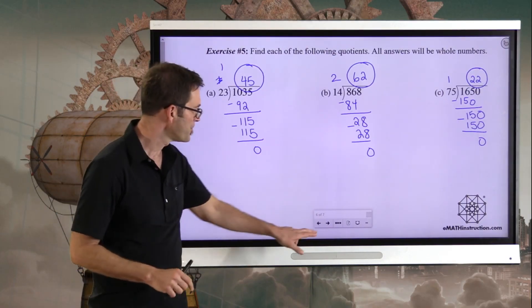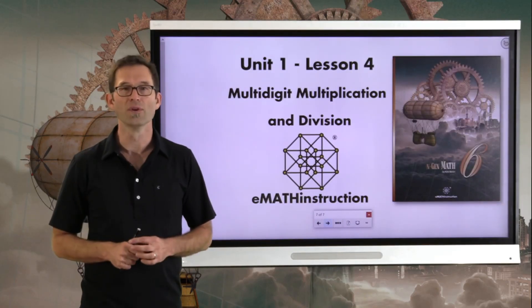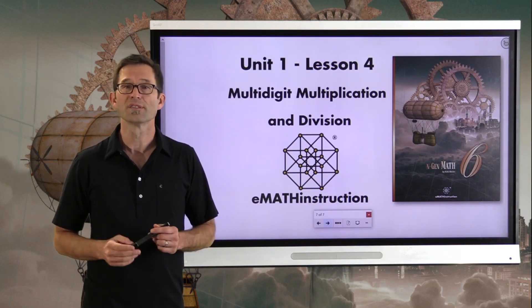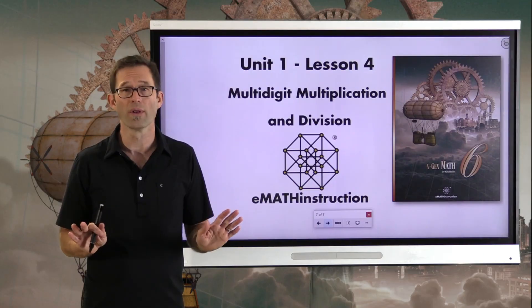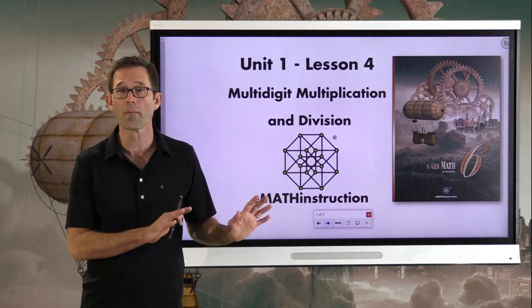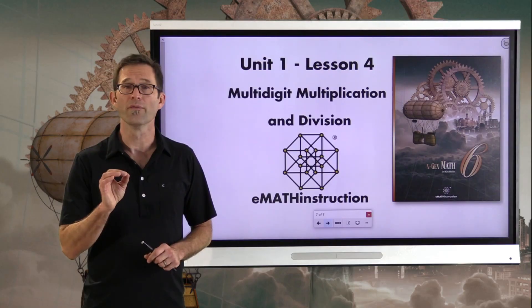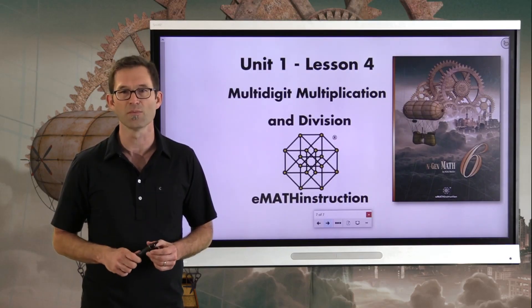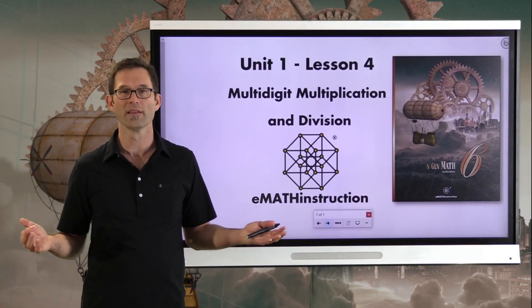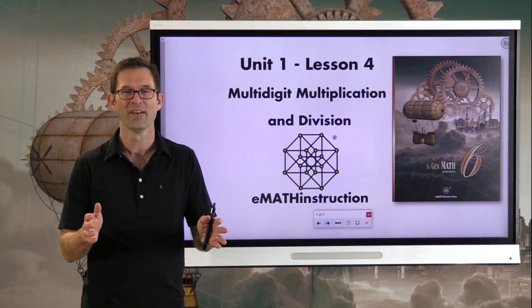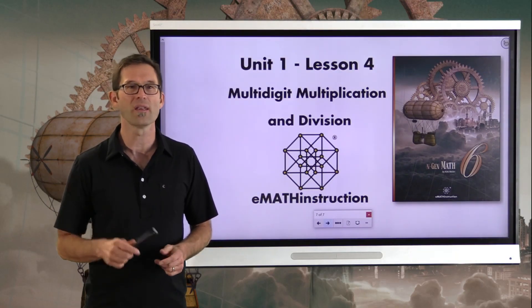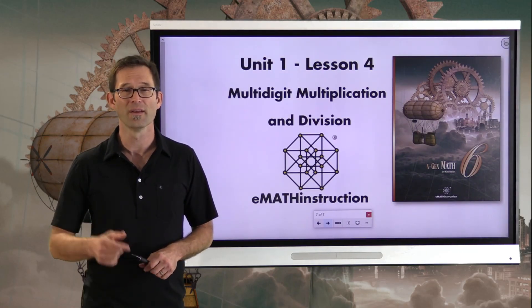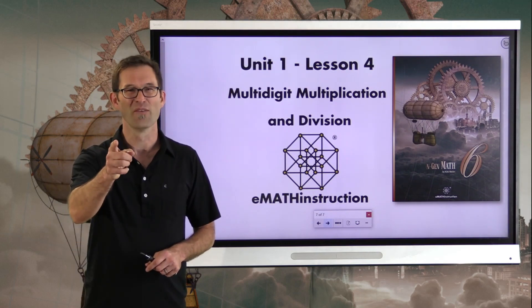Let's do some summary. Today, what we did was we reviewed how to multiply multi-digit numbers and also how to divide them, especially division that results in whole numbers. Mostly we wanted to review these algorithms because you're going to need them later on in the course, especially once we start to multiply and divide decimals. But that's like at least unit three. For now, I just want to thank you for joining me for another NGen Math 6 lesson by eMath instruction. My name is Kirk Weiler. And until next time, keep thinking and keep solving problems.